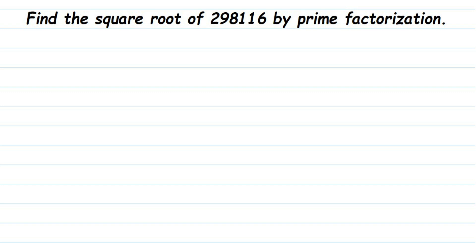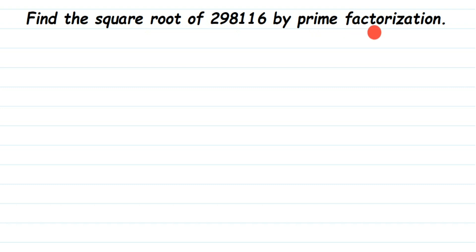Hello everyone. Here is a question on squares and square roots. The question is: find the square root of 298116 by prime factorization. They have given the method we have to use — prime factorization. Prime factorization means we have to express this given number in terms of prime factors, and using that we have to find out the square root.